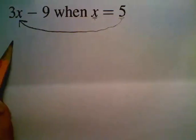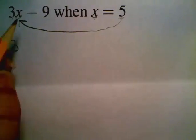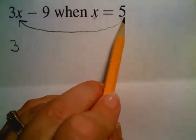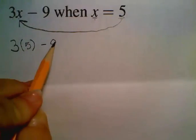So now we have 3. Now whenever they're beside each other, remember that means to multiply. I bet you remember that already though.